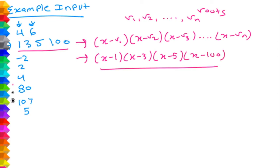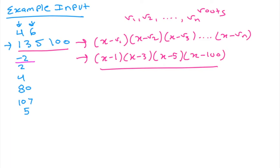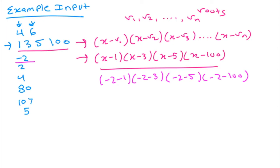So the polynomial we construct is (x - 1)(x - 3)(x - 5)(x - 100). How do we determine whether plugging in a value for x will be positive, negative, or zero? Let's check the value at negative 2. We get (-2-1)(-2-3)(-2-5)(-2-100). We only care about the sign, not the actual integer value. Each factor is negative: -3, -5, -7, and -102 are all negative. Multiplying four negative integers together gives a positive result, so the answer for negative 2 is positive.